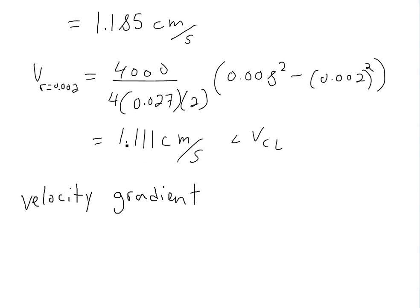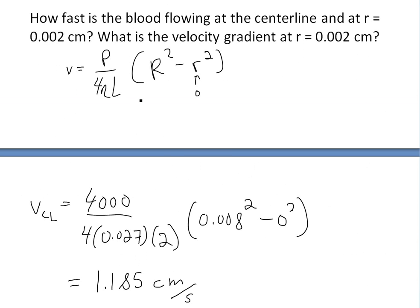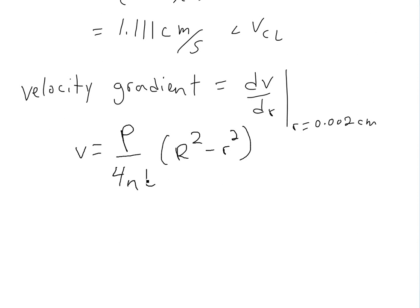For the velocity gradient at r equals 0.002 centimeters, this is dV/dr at r equals 0.002. First, we find the derivative of the velocity function. Everything is constant except r, so the derivative is: the constant P over 4 eta L times the derivative of R squared minus r squared, which gives us P over 4 eta L times (0 minus 2r).